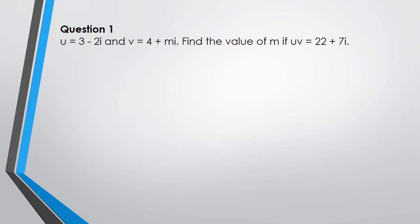Pause this video right now and try to do this question by yourself, and then I'll go through the answers. So we have u as 3 minus 2i, v as 4 plus mi, and when you multiply them together you get 22 plus 7i. I'm going to work out u times v.